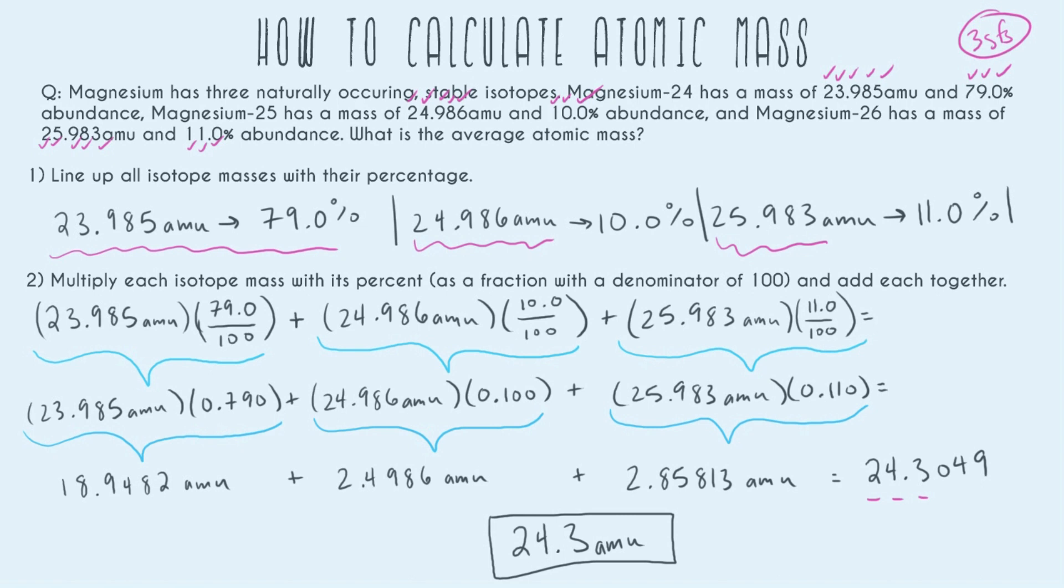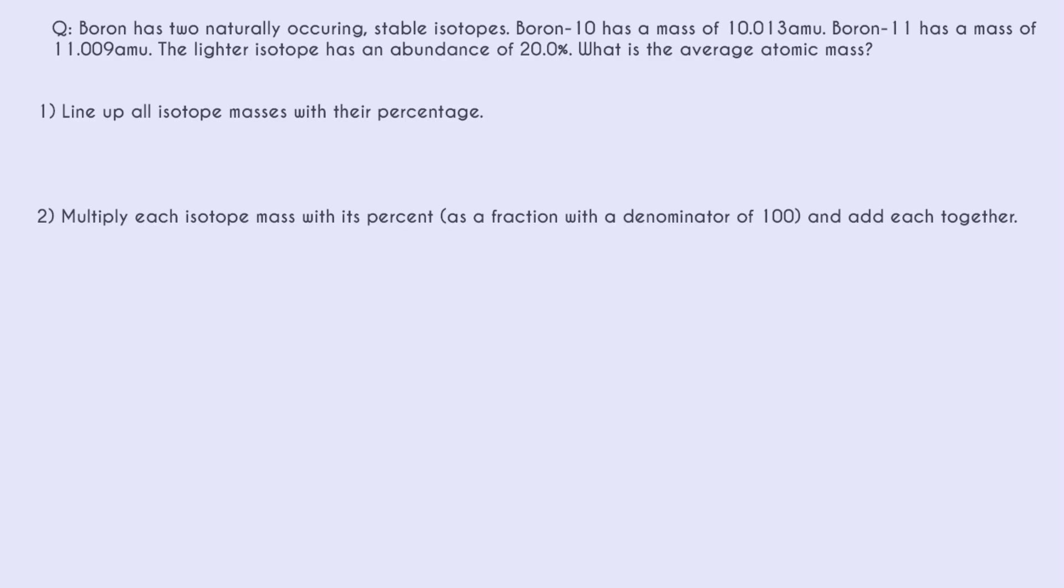So let's go ahead and do another problem that's a little bit different. Boron has two naturally occurring stable isotopes. So again, basically saying in this problem, we're only going to care about two isotopes. Boron-10 has a mass of 10.013 AMU. Boron-11 has a mass of 11.009 AMU. The lighter isotope has an abundance of 20%. What is the average atomic mass?